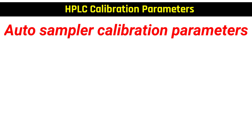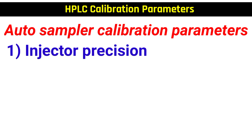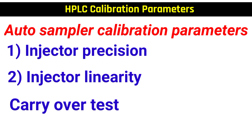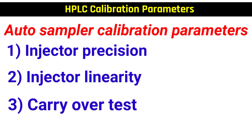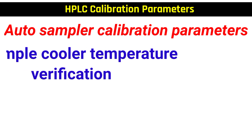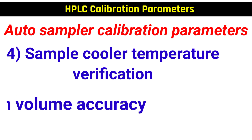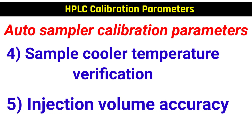Next is autosampler calibration parameters. It includes: number one, injector precision; number two, injector linearity; number three, carryover test; number four, sample cooler temperature verification; and number five, injection volume accuracy.